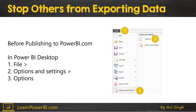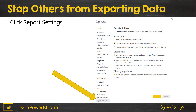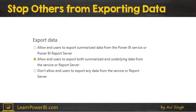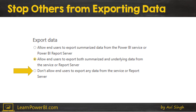If you want to stop others from doing this, before you publish to PowerBI.com, inside Power BI Desktop as the model author go to File > Options and Settings > Options. Near the bottom you have Report Settings, and in there is a section for Export Data. The first option allows exporting summarized data but not underlying data. The default allows end users to export both summarized and underlying data, or you can disable export data entirely for the report once published.